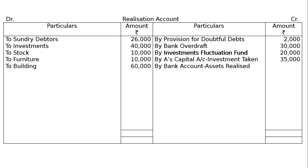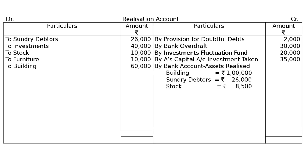Since we are preparing a bank account and not a cash account, the next entry is by bank account — assets realized. Sundry debtors: full amount 26,000. Building sold at Rs. 1 lakh. Stock at 15% less: 10,000 minus 15% equals 8,500. Furniture: 10,000 minus 20% equals 8,000. Total amount realized is Rs. 1,42,500. By bank account, assets realized: Rs. 1,42,500.